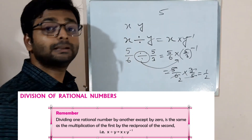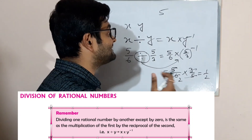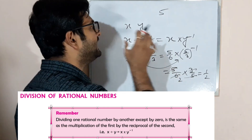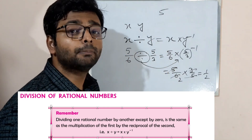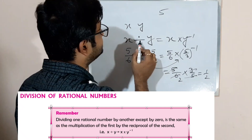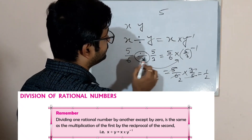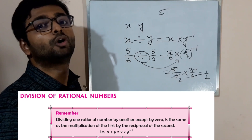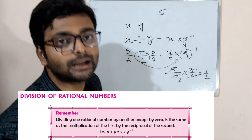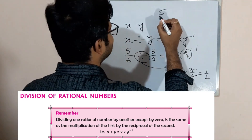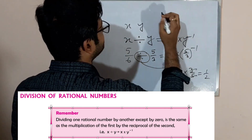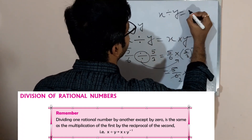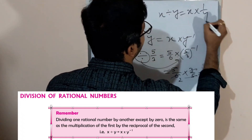If you know how to do division and how to multiply two rational numbers, then this chapter will be easy. Remember: when the divide sign appears, convert it to multiplication. So x divided by y can be written as x into 1 by y.